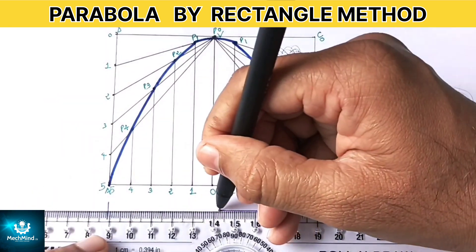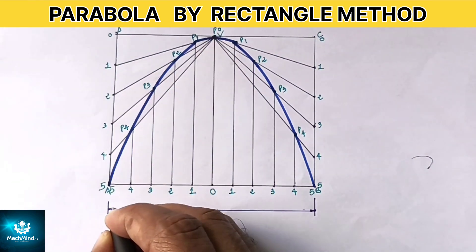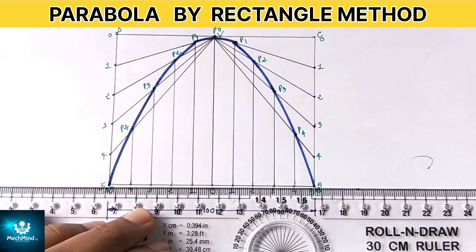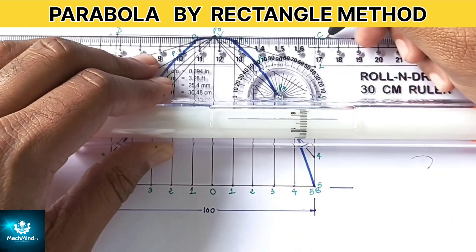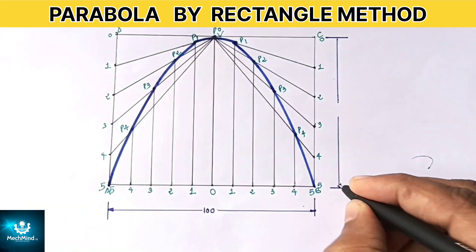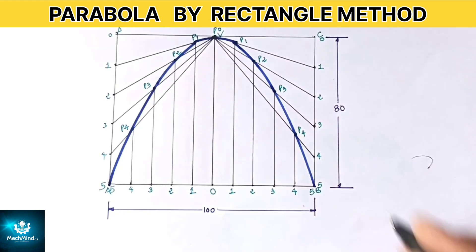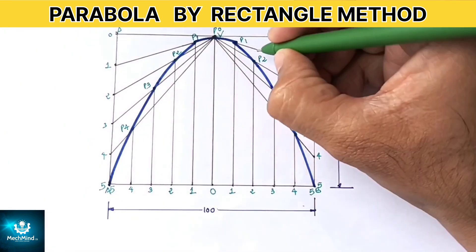So students this is how we can construct a parabola using rectangle method. Parabolas are very important in engineering. They are used in the design of reflectors, suspension bridges, water fountains and even car headlights.